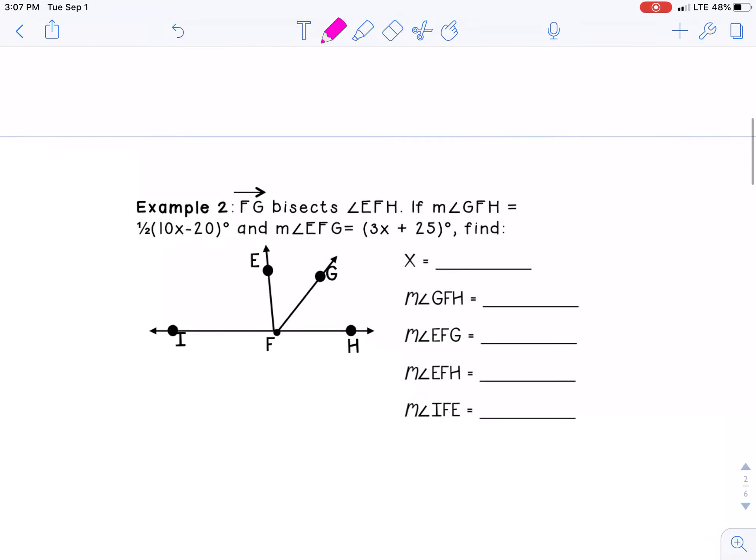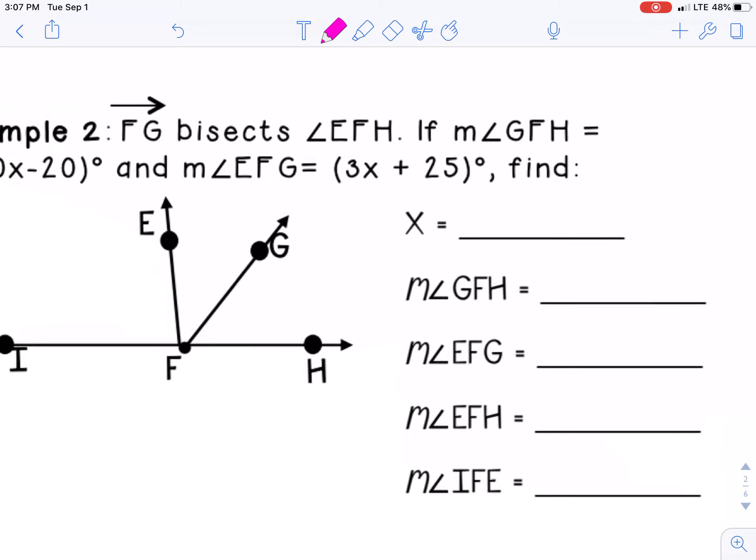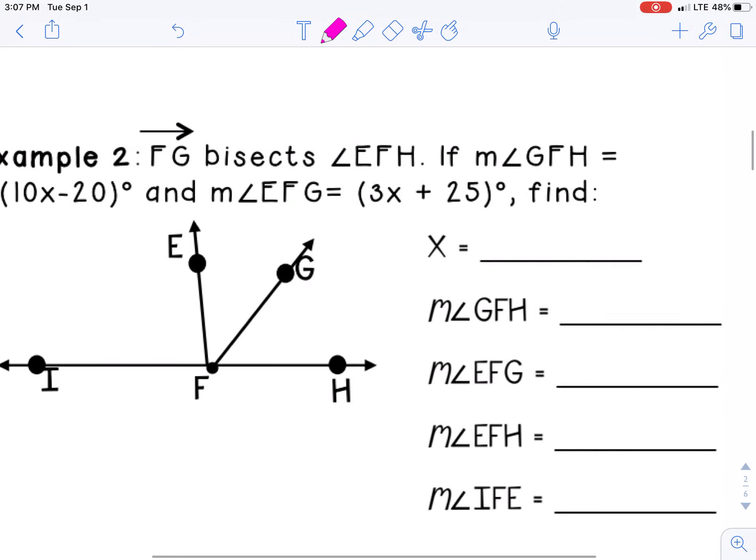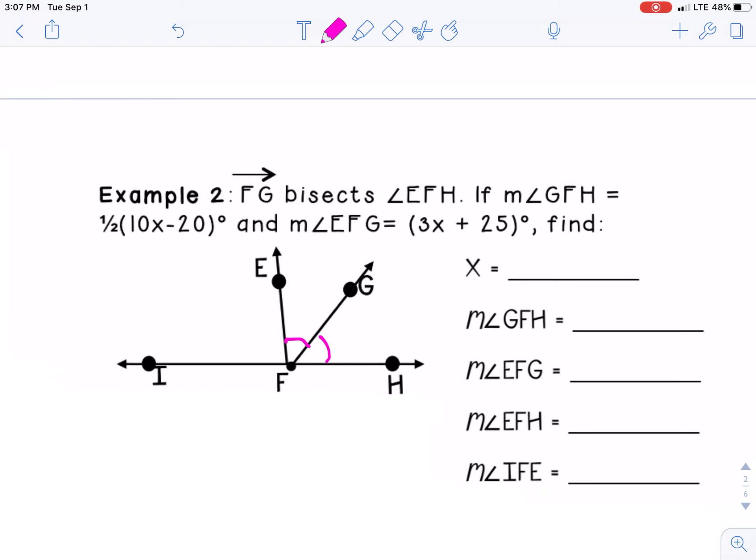So what we got here is FG bisects EFH. So really we have two different types of problems we got to look for. Are they giving me parts, a part and a whole, or are they giving me the part and the part? And depending on the information they give you, we'll determine which way we're going to do it. And we'll show you examples of both. So FG bisects EFH, so that means this angle and this angle are the same. And those two are the parts.